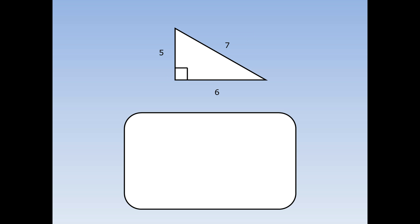In this triangle, the base is 6 and the height is 5, but we've also got the slope of 7. This is just trying to trick us — we don't need the 7 at all. First, we write out the formula: the area of a triangle is base times height divided by 2. Then we fill in the numbers. The base is 6 and the height is 5, and we don't need the 7 at all. 6 times 5 is 30, so it's 30 divided by 2, and 30 divided by 2 is 15. So we write 15 centimetres squared to show its area.